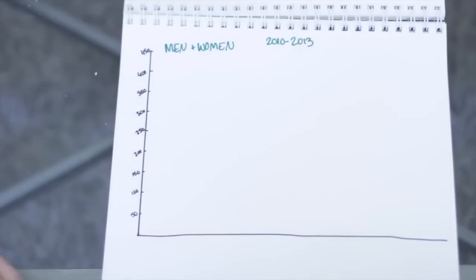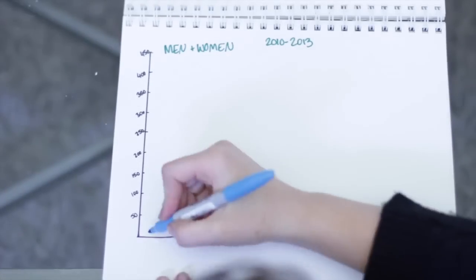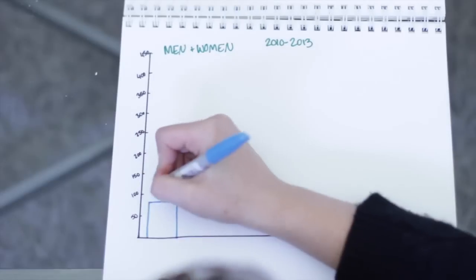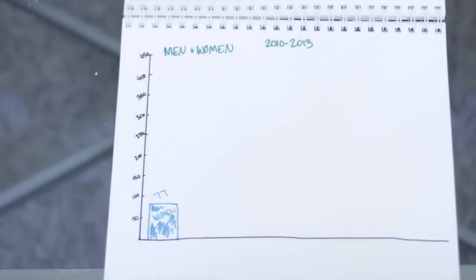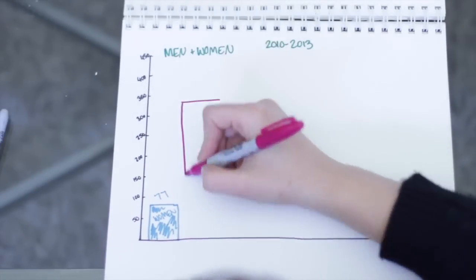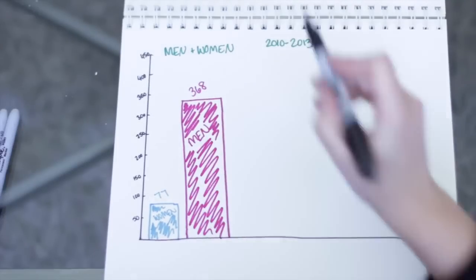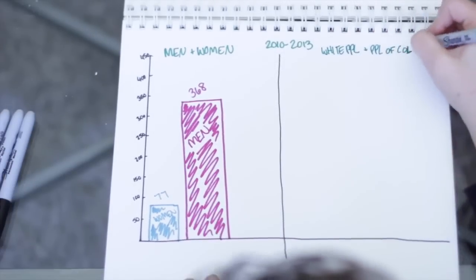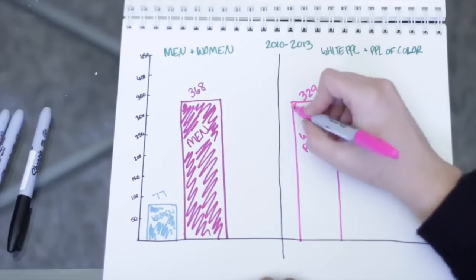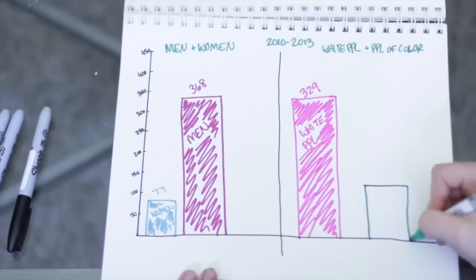Well, from 2010 to 2013, the Google homepage celebrated 445 historical figures. Of those 445, only 77 were women. 368 were men. 329 of those doodles celebrated white people. That's 74%. Nearly three quarters.